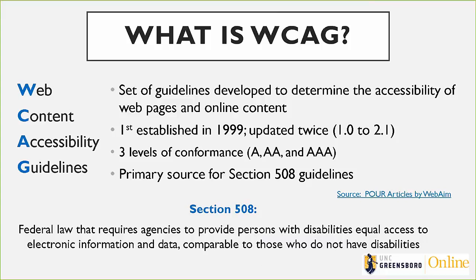There are three levels of conformance: single A, double A, and triple A. Single A is basically the bare minimum for accessibility for online content. Double A is your mid-level — that's what most agencies, institutions, and those who fall under Section 508, the federal law, are striving to get to. Triple A is the top; most organizations are not fully triple A but are probably pulling bits and pieces from it. So most are striving for at least double A.